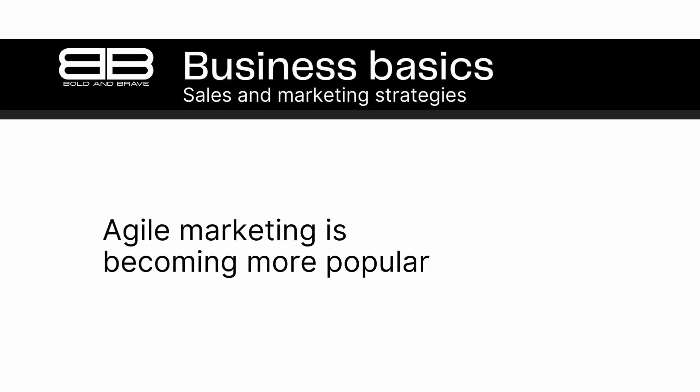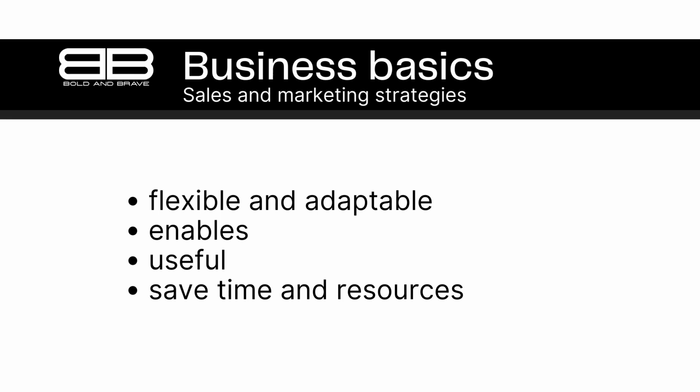Number 10: Agile marketing is becoming more popular. Agile marketing involves flexible, iterative campaigns that can be quickly adapted based on feedback and data analysis. This approach can help brands stay ahead of the competition in a fast-paced market. In today's fast-paced business environment, marketing strategies need to be flexible and adaptable. Agile marketing emphasizes iterative campaigns, quick feedback loops, and data-driven decision-making. By breaking down larger marketing campaigns into smaller, more manageable tasks, businesses can test and refine their messaging and tactics in real-time, making adjustments as needed based on feedback and data analysis.